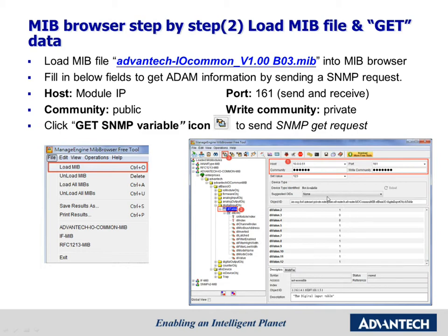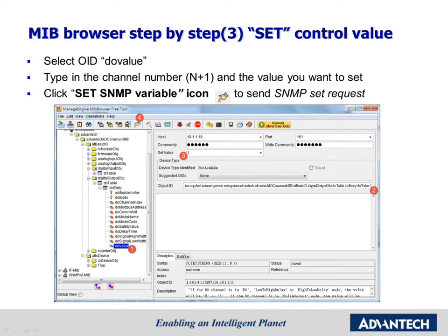Here we get the DI values. This is an example of setting a DO channel. First, we have to select the DO values in the hierarchical tree. As we can see, the OID of the DO value is shown here. For channel 0 of ADAM 6266, its OID would need to add .1 at the end. So we have to type .1 at the end of the OID. For high logic, we type 1; for low logic, we type 0 in the set value. Then send out the SNMP set request by pressing the SET button.